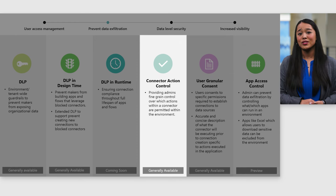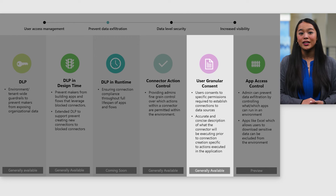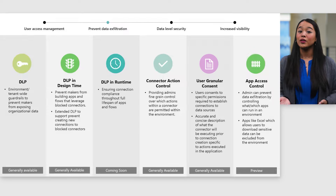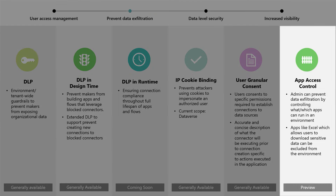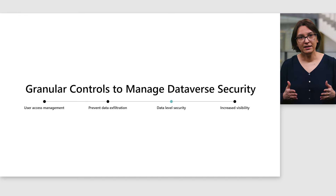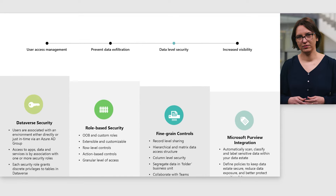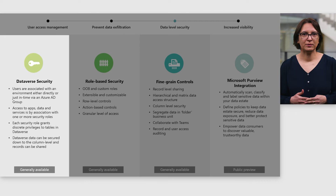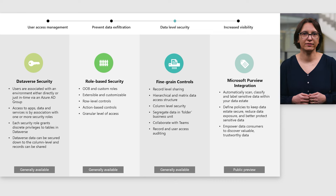Admins can already use connector action controls for additional granularity on a per-environment basis. Given that admins can block certain actions, we now provide granular consent so users know exactly what specific action permissions they are consenting to when leveraging an app that was shared to them. With new app access level controls, admins can prevent exfiltration by allowing or blocking applications or services like Excel from running within an environment. Securing access to the data is critical. Access to data is controlled by the assigned environment roles, the resource permissions, and the Dataverse security roles. You can combine business units, role-based security, row-based security, and column-based security to define overall access to the information that users have in a Power Platform environment.